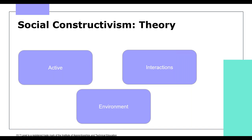We'll start by exploring the key principles of Social Constructivism Theory. First, learning is an active social process between teachers and peers. Second, interactions — students' understanding and knowledge of the world is based on the quality of interactions with others. Third, the environment — the learning environment, the home environment, culture and society can all influence the quality of interactions. When planning for teaching and learning, do we consider all of these things?